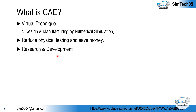We can reduce physical testing, we can save money, and it is the most important tool for the research and development department. Why? Because before even manufacturing the component, before even the process takes place, we can check it. And if we find any error, or our design or assembly does not meet the criteria, then we can modify it within the development stage itself.